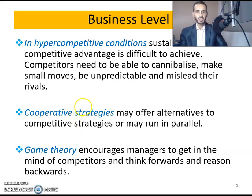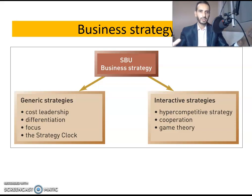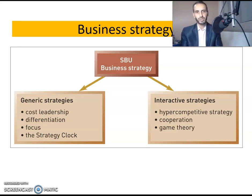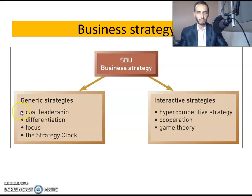At the business strategic or SBU level, there are two pools of strategies. The first pool contains generic strategies — cost leadership, differentiation, and focus — and the strategy clock. Cost leadership companies seek to become efficient in terms of cost: it's a strategy of cost reduction, and based on this cost reduction they can reduce their prices, which may result in gaining a competitive advantage in the marketplace. Cost leadership, cost saving, cost efficiency, and cost scaling are all strategies based on cost reduction.